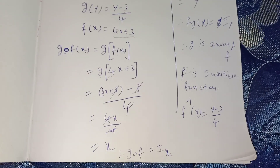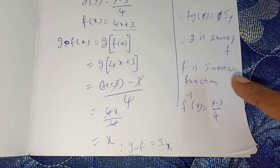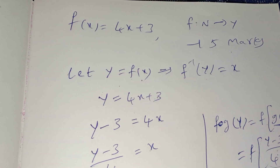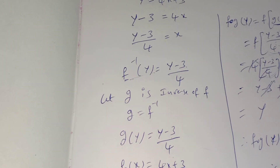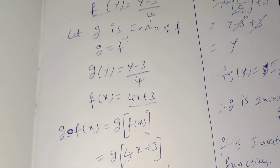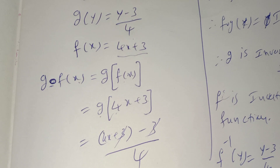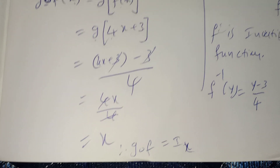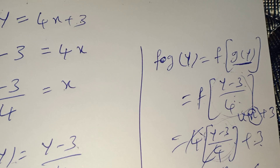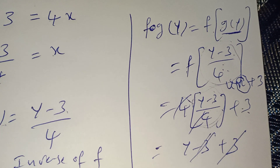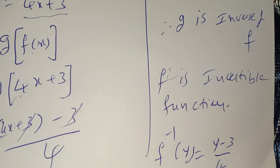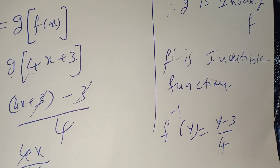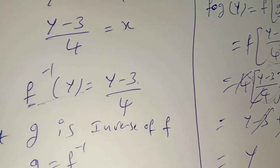If the question asks to verify it is invertible and find the inverse of f, write f⁻¹ as shown. This is the procedure — a very important question. To summarize: if you know f(x), find x. That means g = f⁻¹, g(y) = (y - 3)/4, f(x) = 4x + 3. g∘f = Iₓ, f∘g = Iᵧ, so g is the inverse of f, f is invertible, and f⁻¹(y) = (y - 3)/4.